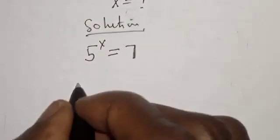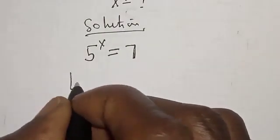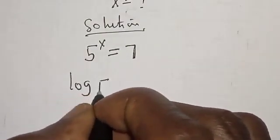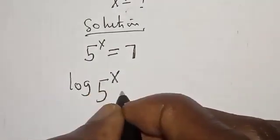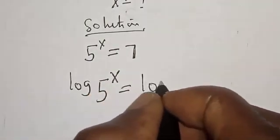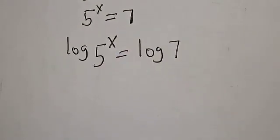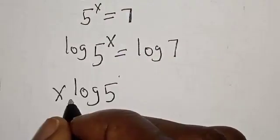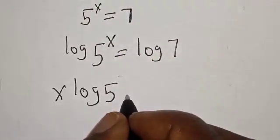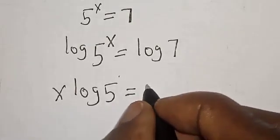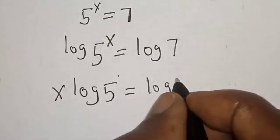Now, let's take the log of both sides. Log 5 raised to power x is equal to log 7. Now, we have x log 5 is equal to log 7.